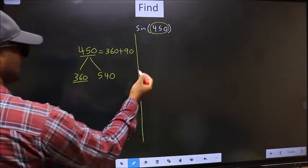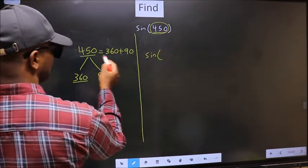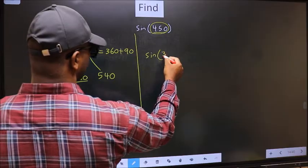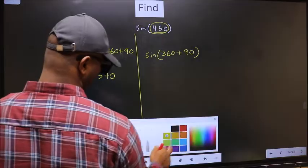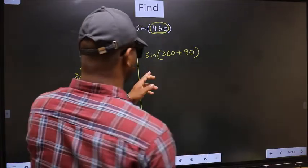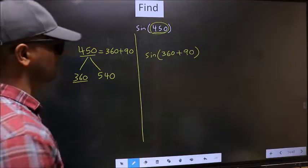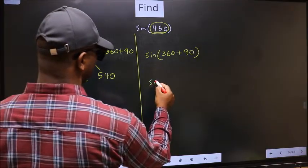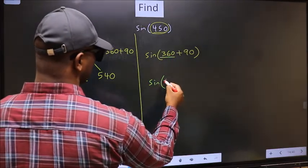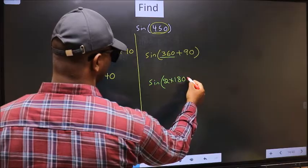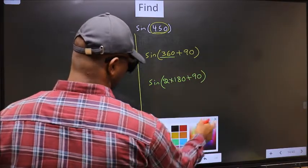So this will become sin. In place of this, we should write this 360 plus 90. This is your step 1. Next, sin, in place of 360, now we should write 2 times 180 plus 90.